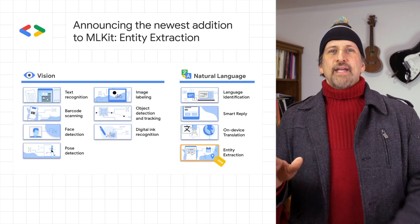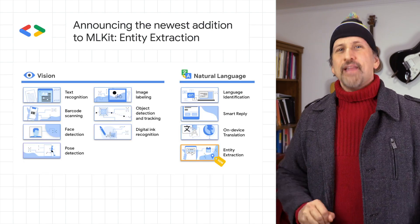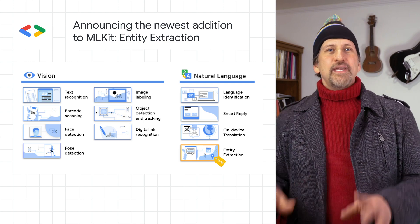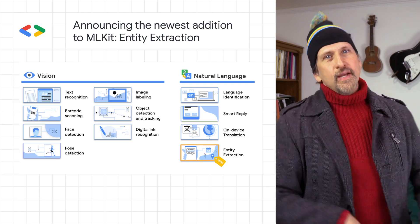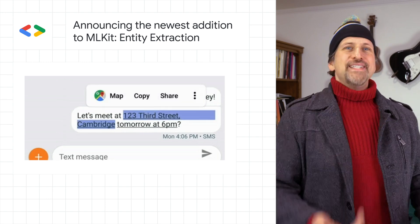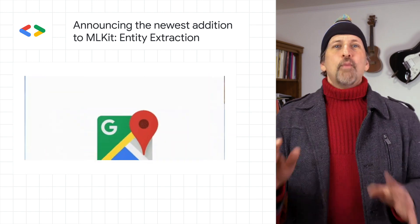We've added entity extraction to the official ML Kit lineup, allowing you to detect and locate entities from raw text and take action based upon those entities. Supported entities include address, date, time, email, flight number, and more.